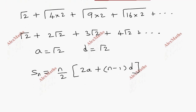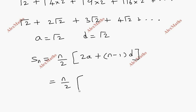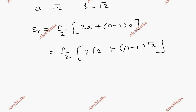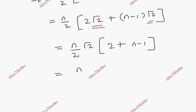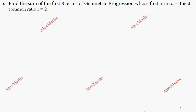Substituting a = √2 and d = √2: S_n = n/2 × (2√2 + (n−1)√2) = n/2 × √2 × (2 + n − 1) = n/2 × √2 × (n + 1) = n(n+1)√2 / 2.